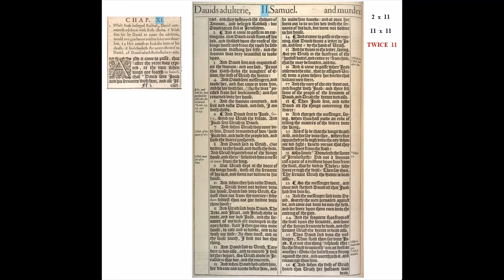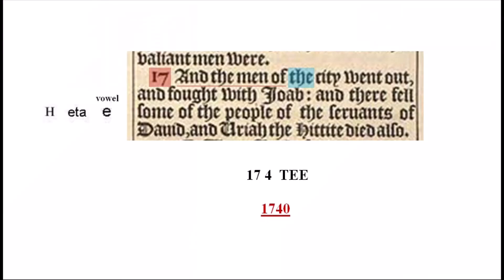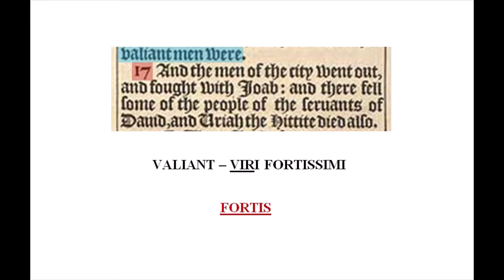Now we're looking at the third book of the Old Testament comprised of two books: 2 Samuel, chapter 11. If you've been doubting that I'm talking about Edward de Vere, this might clear it up. First, check verse 17. There are four words followed by the word 'the.' H or eta can be read as E, so we have 1740. Over the verse number for 17, it says 'Valiant men were.' In Latin, 'valiant' is 'viri fortissimi' — notice the word 'vir.' Another word for valiant is 'fortis,' a name found throughout the sonnet and first folio codes for Edward de Vere.